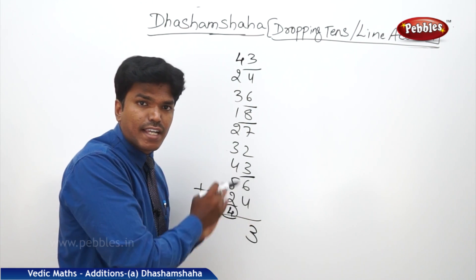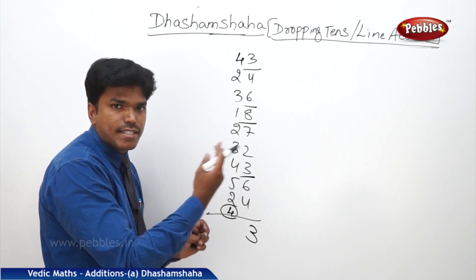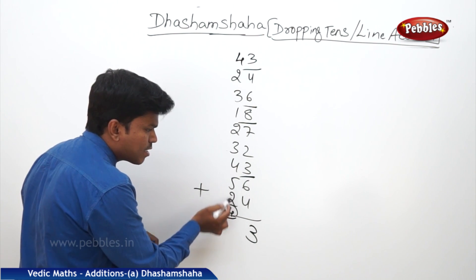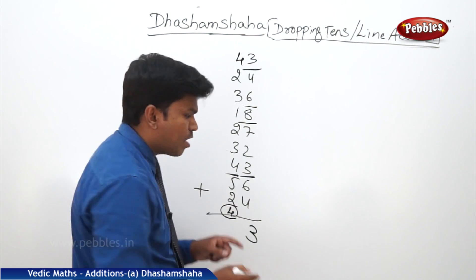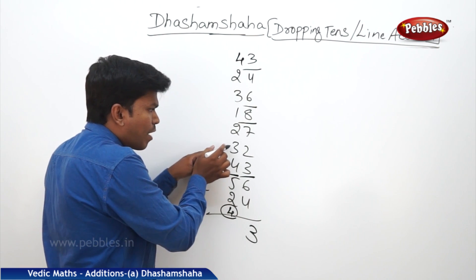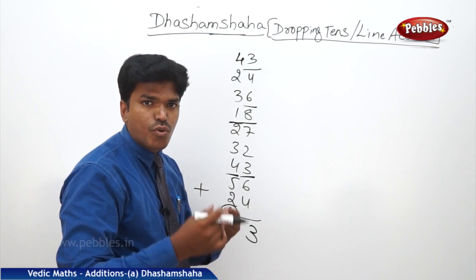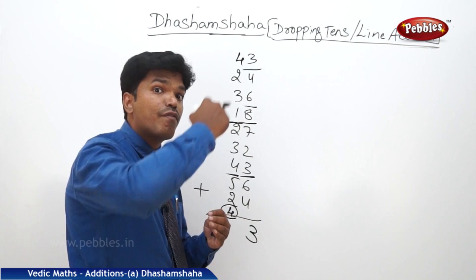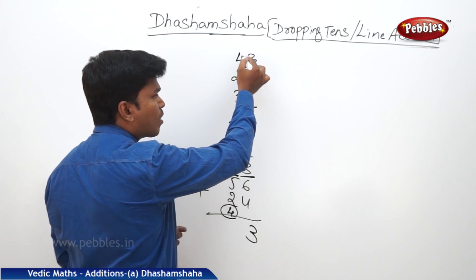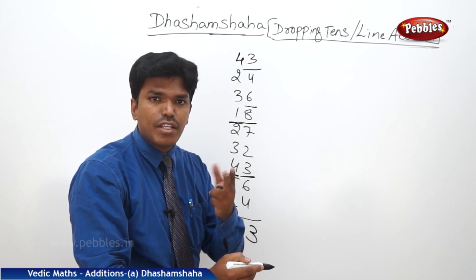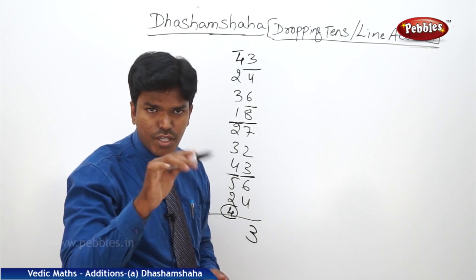Now count the second line, starting from 4. 4 plus 2? 6. 6 plus 5? 11 — more than 10, drop it. Carry 1. 1 plus 4? 5. 5 plus 3? 8. 8 plus 2? 10 — more than 10, drop it. Remaining is 0 — start freshly. 1 plus 3? 4. 4 plus 2? 6. 6 plus 4? 10 — even though it is 10, you have to drop the 10. Remaining is 0.